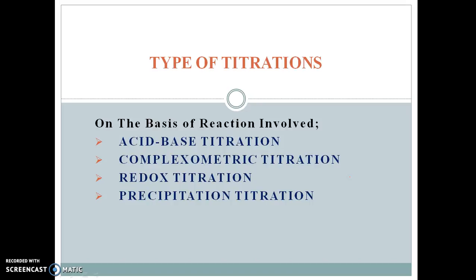Types of titration. On the basis of reaction involved, basically there are four types of titration. First one is acid-base titration in which acid reacts with the base. Second one is complexometric titration in which a complexing agent reacts with the metal ion. Third one is redox titration in which an oxidizing agent reacts with the reducing agent. And last one is precipitation titration in which a precipitating agent reacts with the metal ion or an ion to form an insoluble complex which gets precipitated out during the titration.